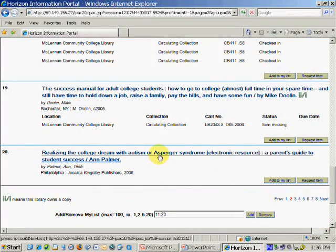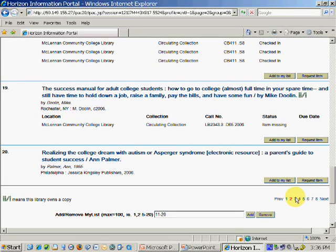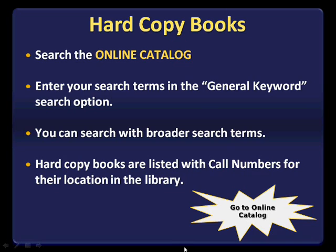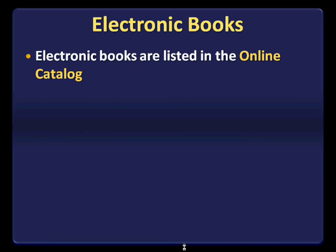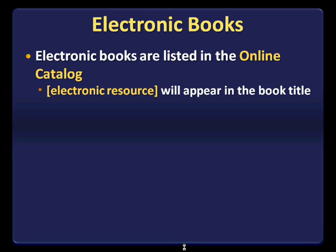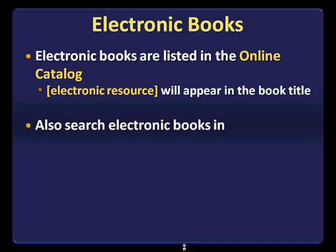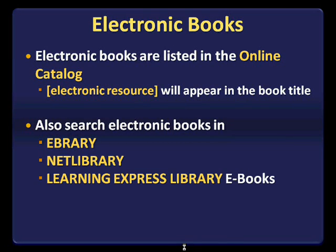Finally, there is another type of book that will be listed in the online catalog, and that is the electronic books. Most of our electronic books are listed in the online catalog. Whenever you find an electronic book record, you will see the phrase electronic resource or computer file within the title of the book. You can also search for books that are electronic by themselves in several of our databases.